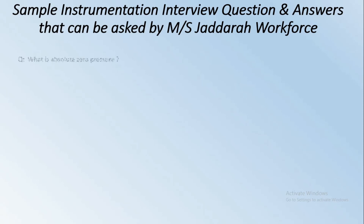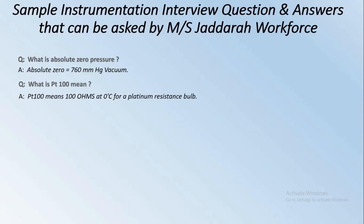First question: What is absolute zero pressure? Absolute zero equals 760 mm of Hg vacuum. Next: What is PT100? PT100 means 100 ohms at zero degrees centigrade for a platinum resistance bulb.